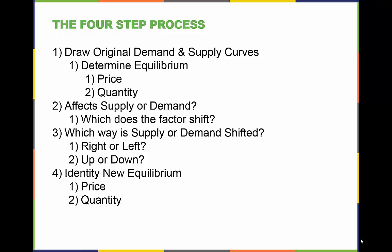As factors shift supply and demand, we need to understand the effect on equilibrium price and quantity. Things can get pretty complicated, especially if both demand and supply are shifting at the same time. To keep things straight, there are four basic steps that we can follow to help us.